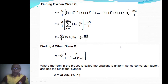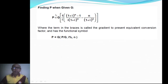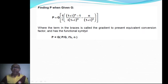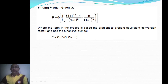For finding P when given G: P equals G times the quantity in braces, where the term inside the braces is called the gradient-to-present equivalent conversion factor, symbolized as (P/G). So P/G equals that quantity in braces.